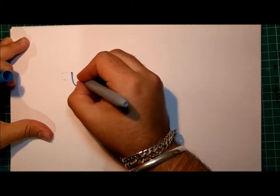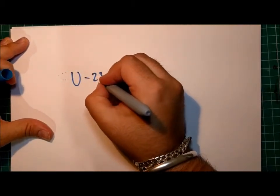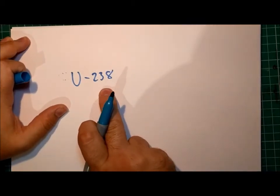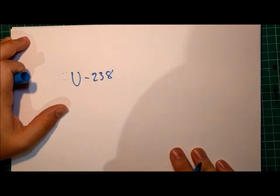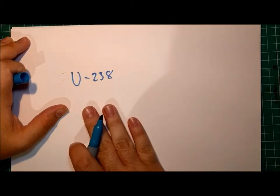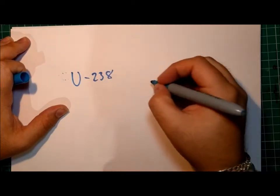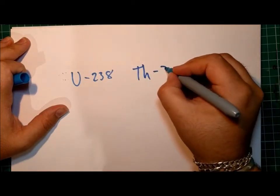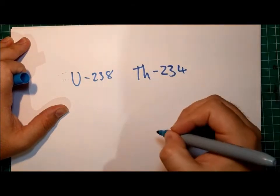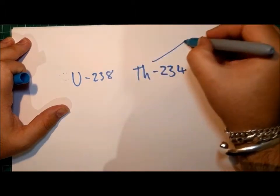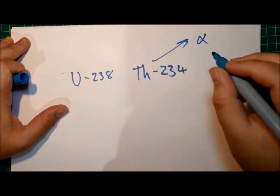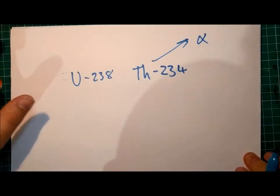For instance, something like uranium-238, that is uranium with an atomic mass of 238, has a tendency to decay randomly into thorium-234. And when it does that, it emits, it gives off what's known as an alpha particle. Now we're going to talk about what those are in a moment.